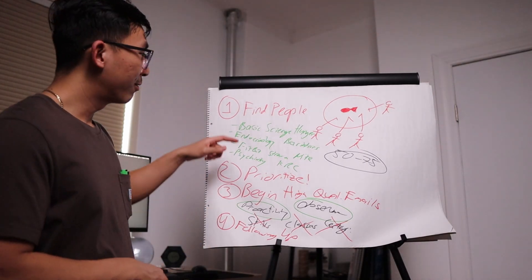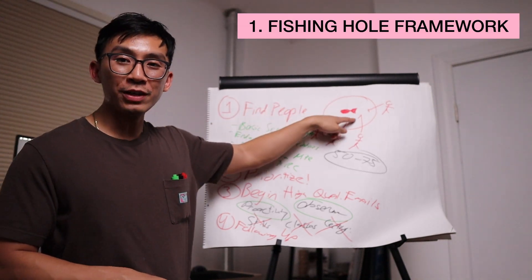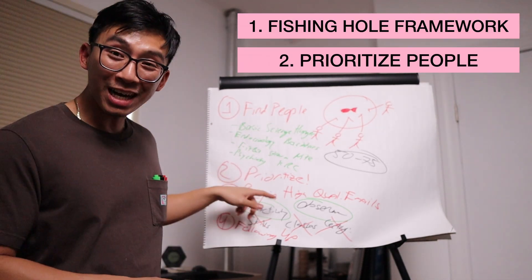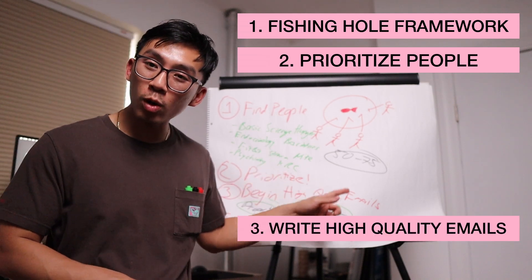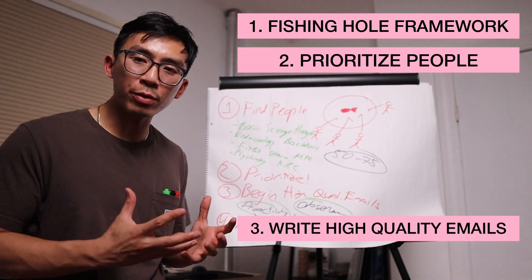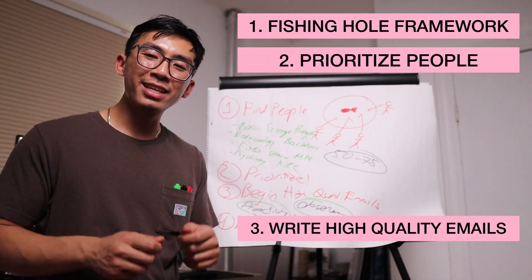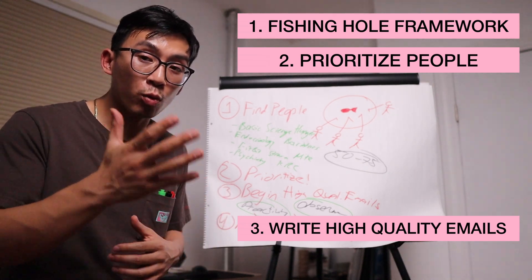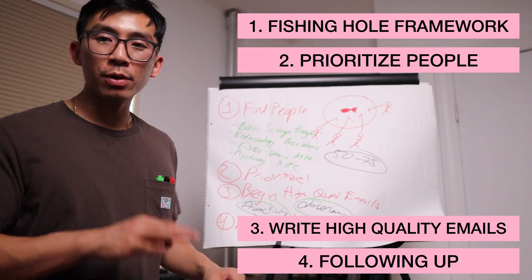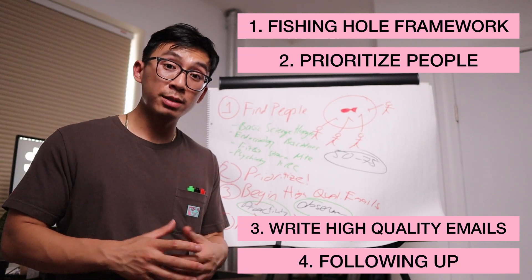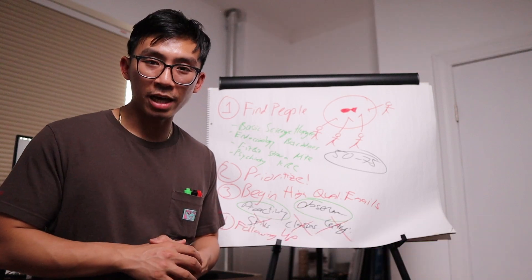Four simple steps. Finding people using our fishing hole framework. Prioritizing your tier one candidates. Beginning to write high quality emails based on curiosity, proactivity, and observation. You can use our word for word email templates to help. And fourthly, following up three times over three weeks to show people that you actually care about the position.